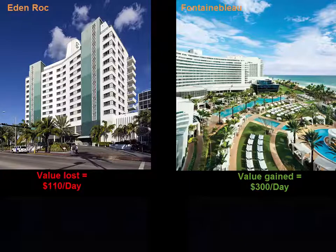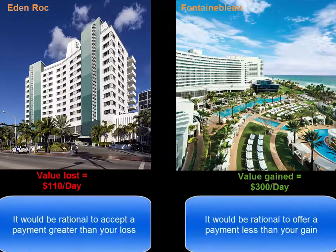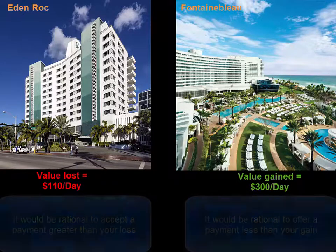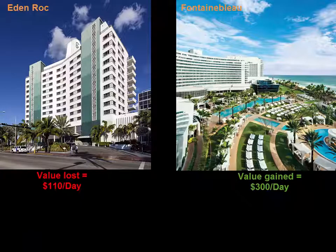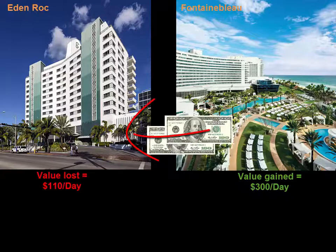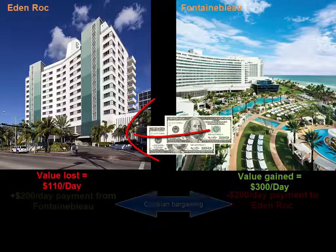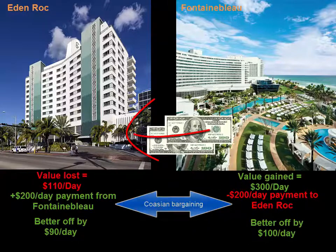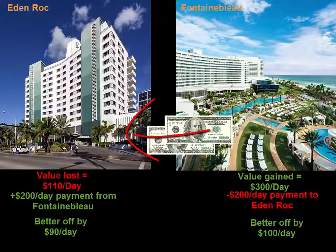Basically, the Fountain Blue could offer the Eden Rock anywhere between $110 and $300 per day for the right to have this extension. For the sake of our example, let's assume the Fountain Blue Hotel pays $200 per day to the Eden Rock in order to obtain the property rights to build that extension. Now both parties are better off as a result of private bargaining, and we are left with the allocatively efficient outcome.